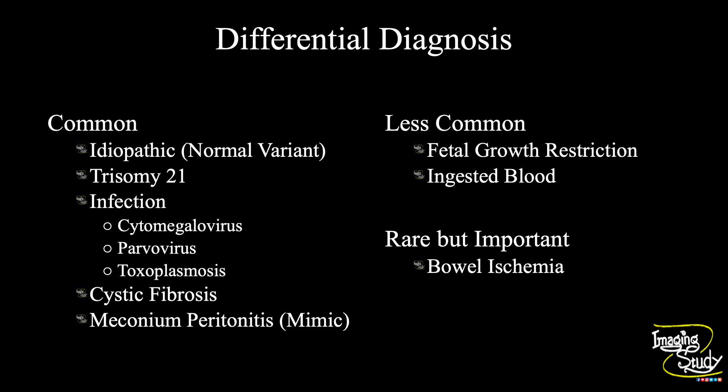Now, what are the differential diagnoses of this case? It might be idiopathic. In the third trimester, meconium-containing bowel may appear echogenic and it is quite a normal finding. It may be associated with trisomy 21, cystic fibrosis, and may be present in fetal infections like cytomegalovirus, parvovirus, or toxoplasmosis. It is also seen in meconium peritonitis.